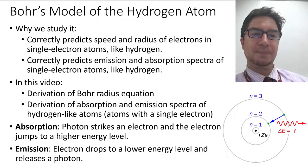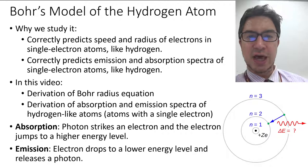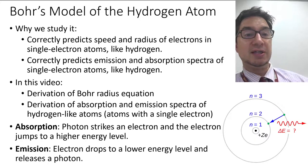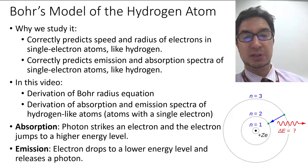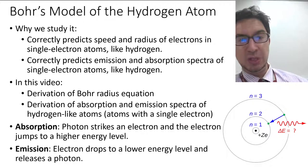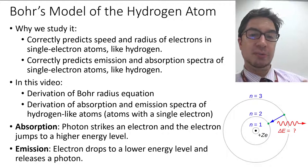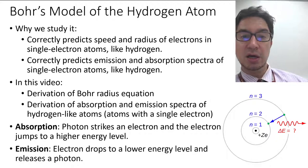Hey everyone, welcome back. In this video, we're going to look at Bohr's model of the hydrogen atom. The reason we study it is that it correctly predicts the speed and radius of electrons in single electron atoms like hydrogen, and it also correctly predicts emission and absorption spectra of single electron atoms like hydrogen.